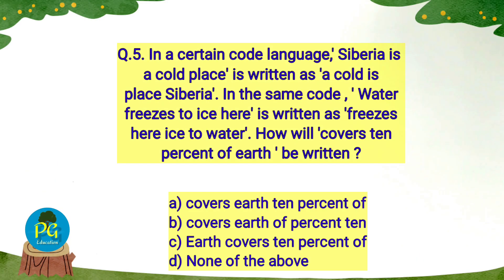Question number 5: in a certain code language, 'Siberia is a cold place' is written as 'a cold is place Siberia'. In the same code, 'water freezes to ice here' is written as 'freezes here ice to water'. How will 'covers 10% of earth' be written? Options: A) covers earth 10% of, B) covers earth of percent 10, C) earth covers 10% of, D) none of the above.